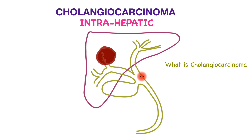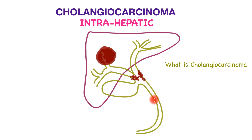Cancers of the bile tube more commonly arise outside of the liver within the bile tube itself. This region is called the hilum of the liver, and cancer here is called hilar cholangiocarcinoma, or it may develop further down in the bile tube towards the pancreas. I will talk about bile duct cancer outside of the liver in a different video. This video is focused only on intrahepatic bile duct cancer.